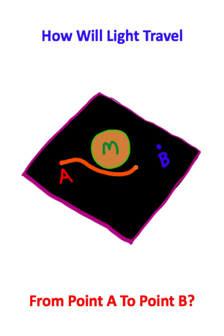Light is actually going to curve, or basically bend, around this massive object to get to its destination. And this is the concept of space-time.